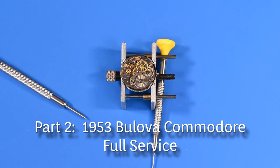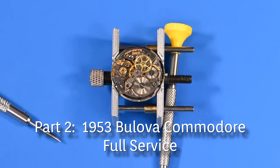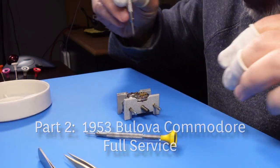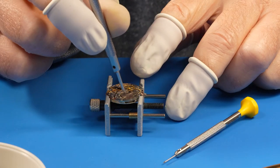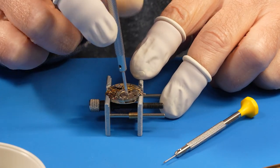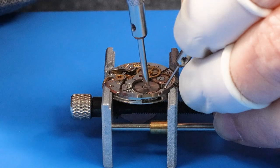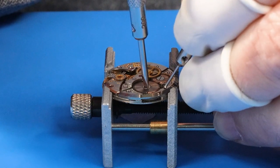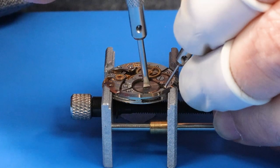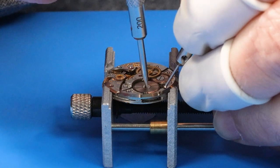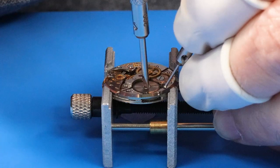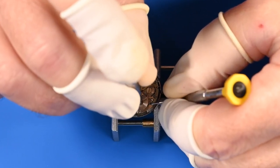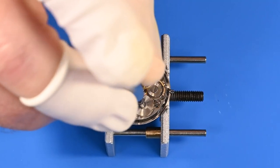With the Bulova Commodore's movement running again, we can perform a full service on the watch. Before disassembly, we need to unwind the mainspring so there's no power being applied to the motion works, which makes the watch tick and moves the hands. I do this by disengaging the spring-loaded click from the ratchet wheel with a small screwdriver while I ease down the mainspring barrel with the larger one. You can feel when the mainspring is unwound, and if the watch is running, the balance will stop moving.